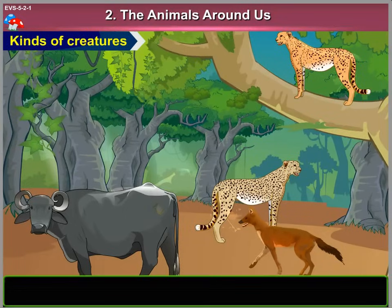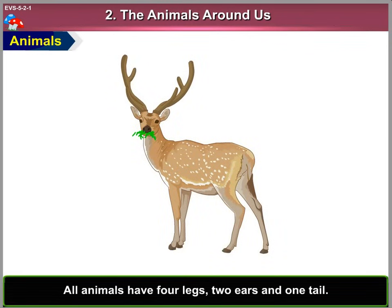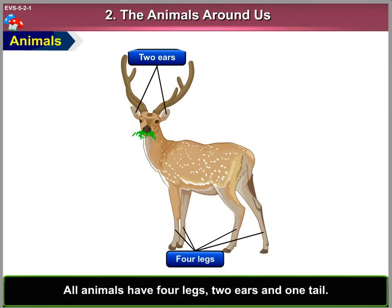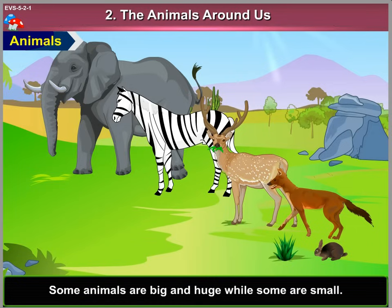Kinds of Creatures. 1. Animals. All animals have four legs, two ears and one tail. Some animals have horns. Some animals are big and huge, while some are small.